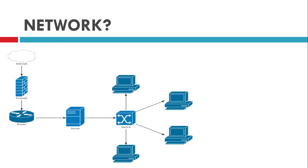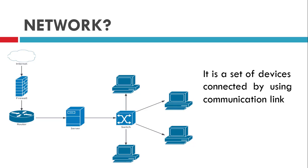Let's begin with what is a network. We are using network in our daily life, but if someone asks us what is a network, we are unable to answer. In a network you may find different types of devices like computer, switch, server, or router. So first of all, we can say that a network is a set of devices, and these devices must be connected using some link, some transmission medium. So we can say it is a set of devices connected by using some communication link.